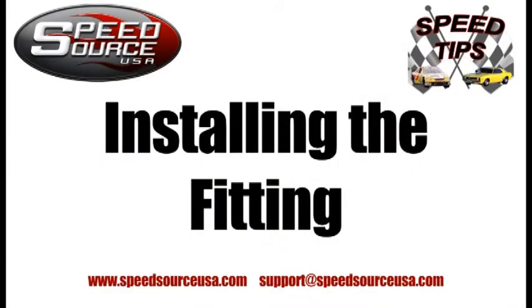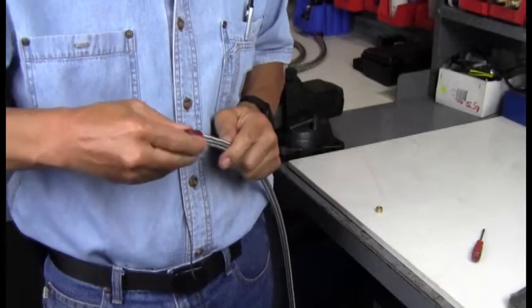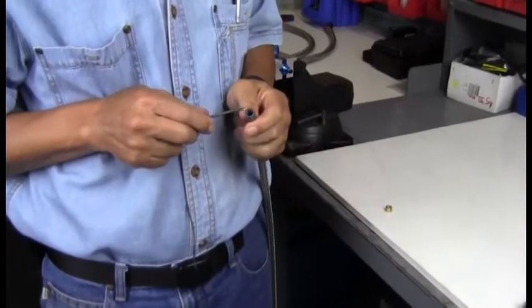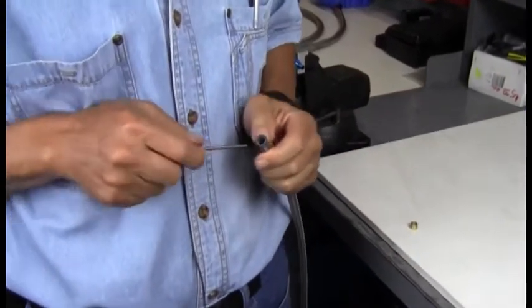The first step is to install the socket on the hose, and then you need to flare the stainless steel braiding away from the Teflon liner.